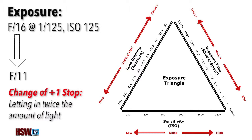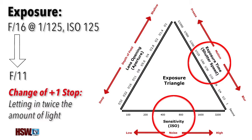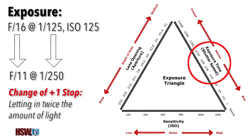We must then make up for it by cutting the amount of light in half using either the shutter speed or the ISO. So in the case of adjusting the shutter speed, the shutter changes from 1/125th of a second to 1/250th of a second.